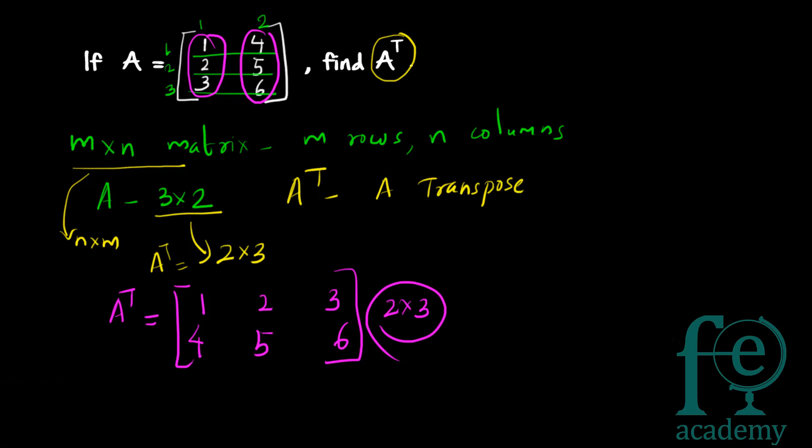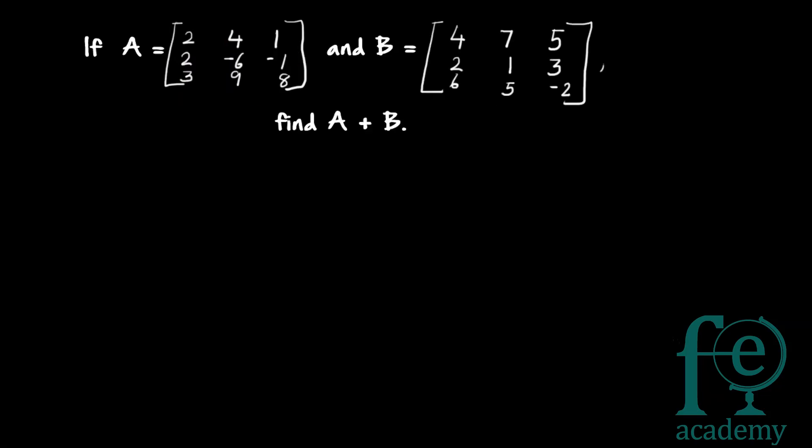Now question 2: if A is equal to matrix 2, 4, 1, 2, minus 6, minus 1, 3, 9, 8, and matrix B is equal to 4, 7, 5, 2, 1, 3, 6, 5, minus 2, find A plus B. You are asked to find out the sum of the matrices.